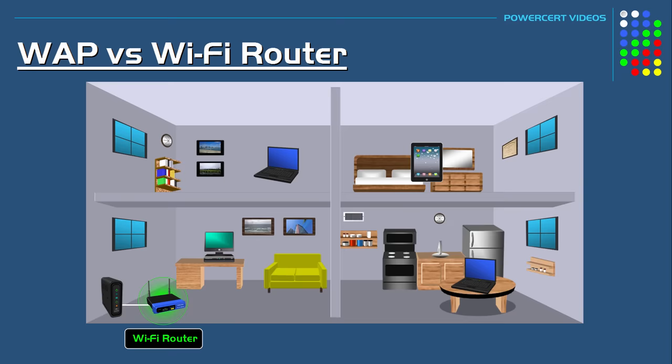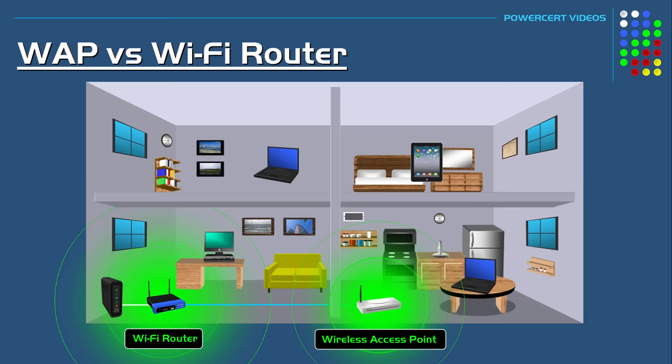On a final note, wireless access points are often used to further extend a network's existing wireless signal. For example, if a home needed to extend its wi-fi signal further, you can attach a wireless access point using a network cable to the wi-fi router so that distant devices can connect to the wi-fi signal.